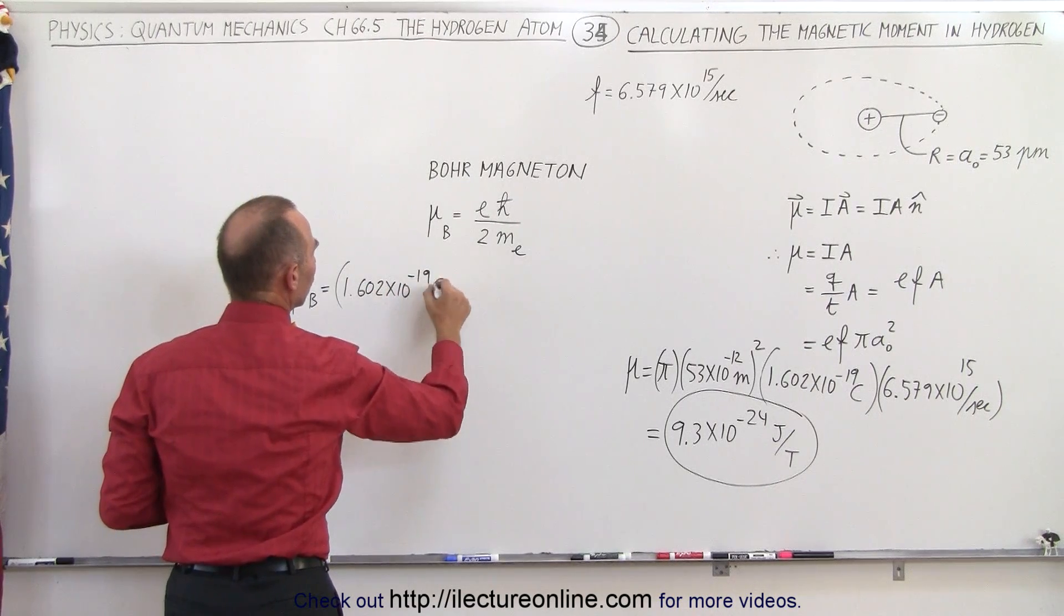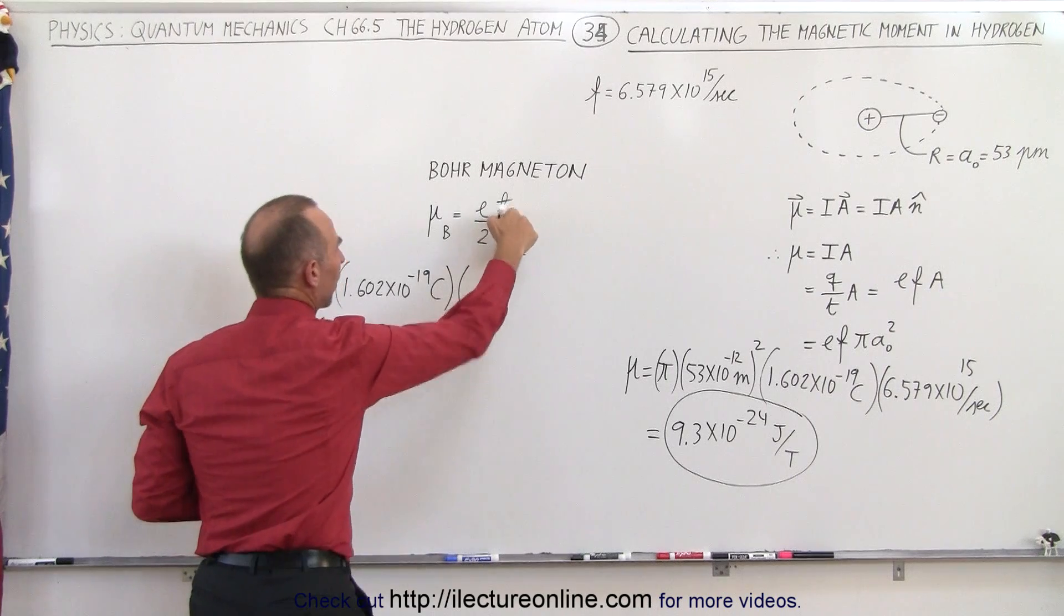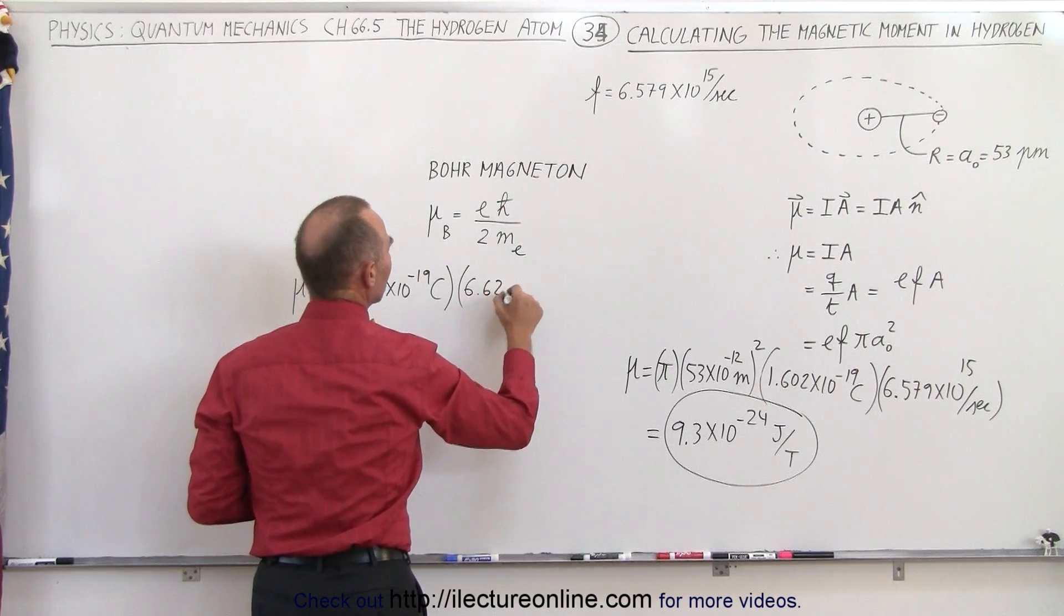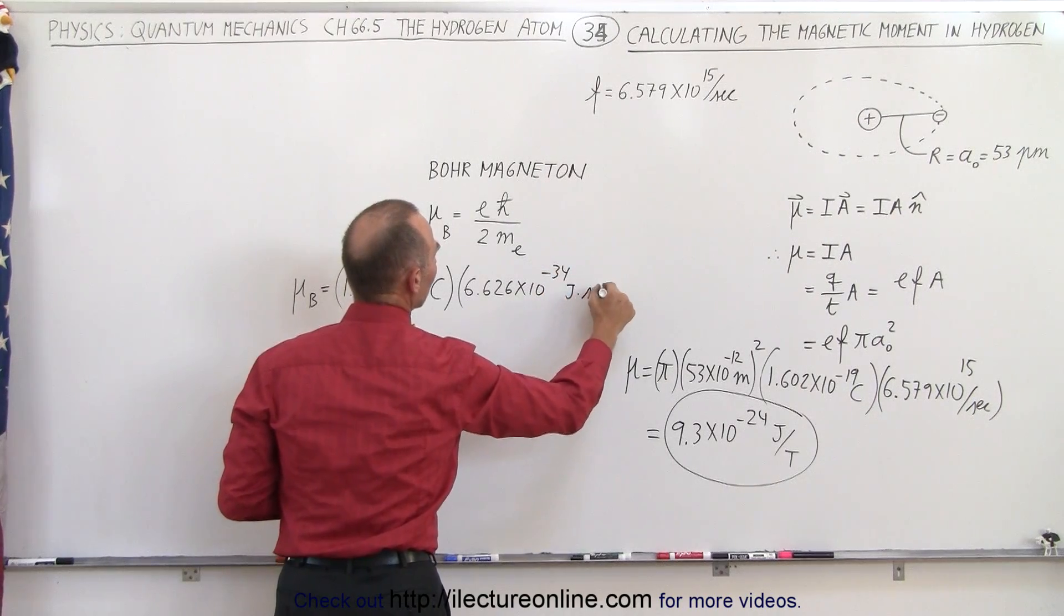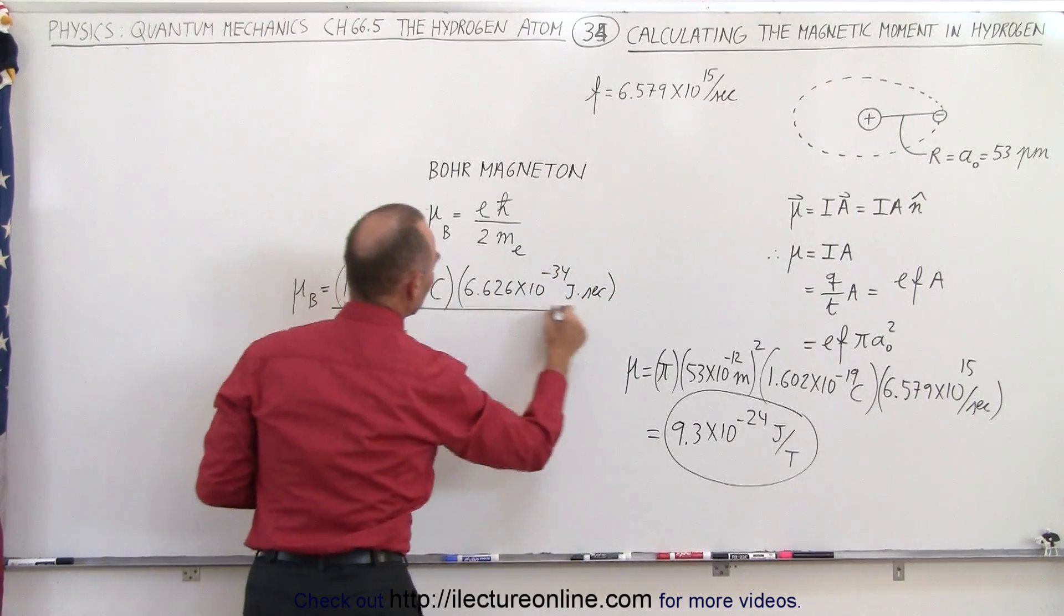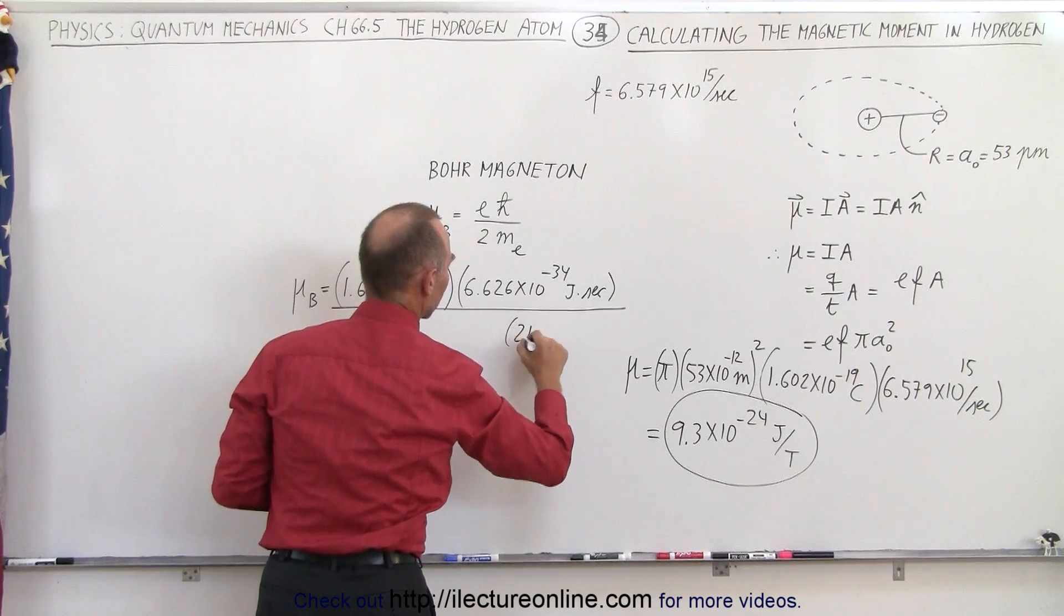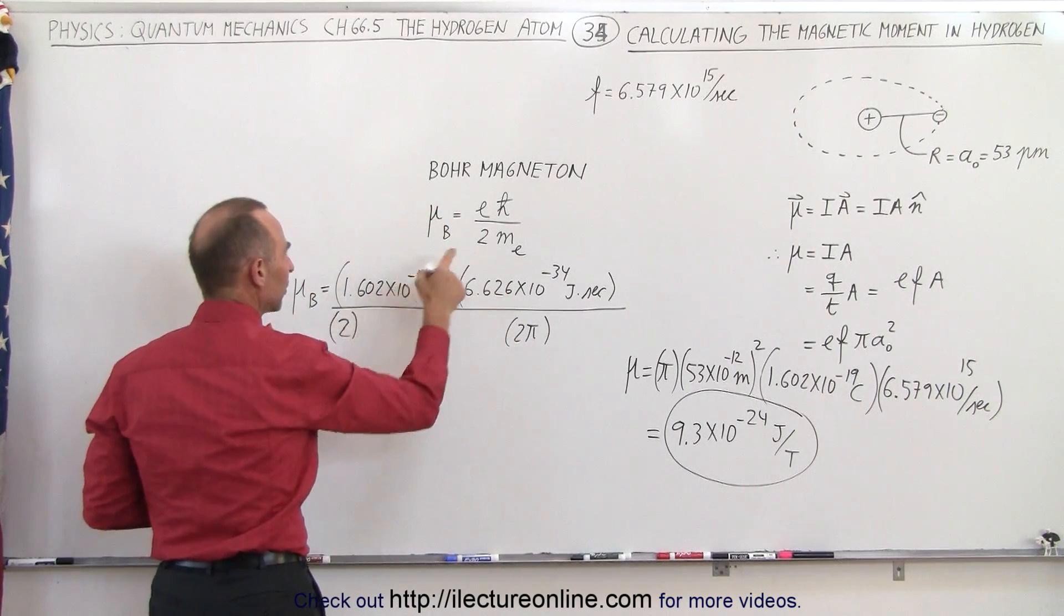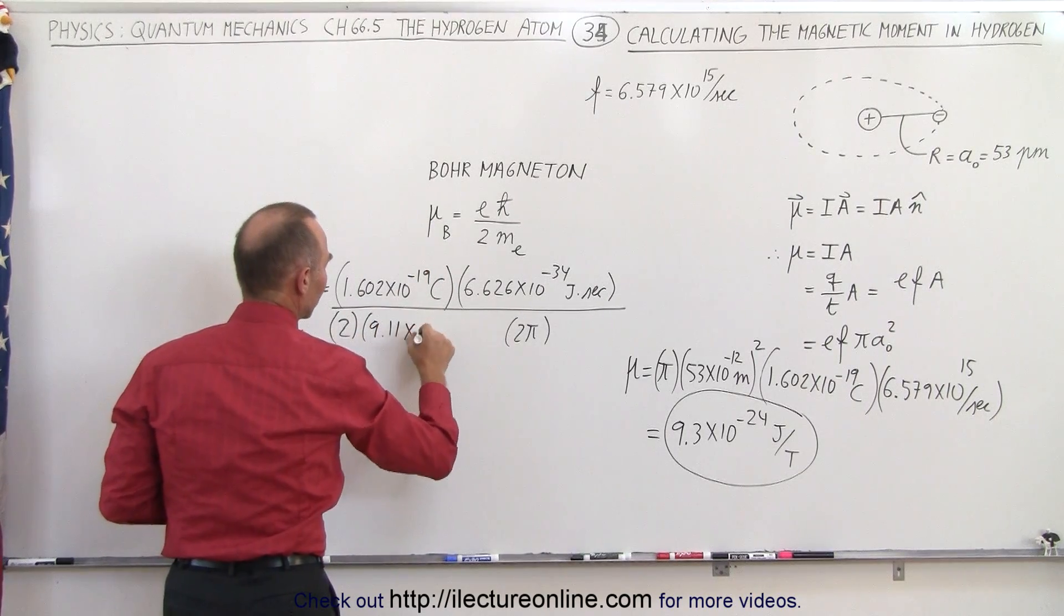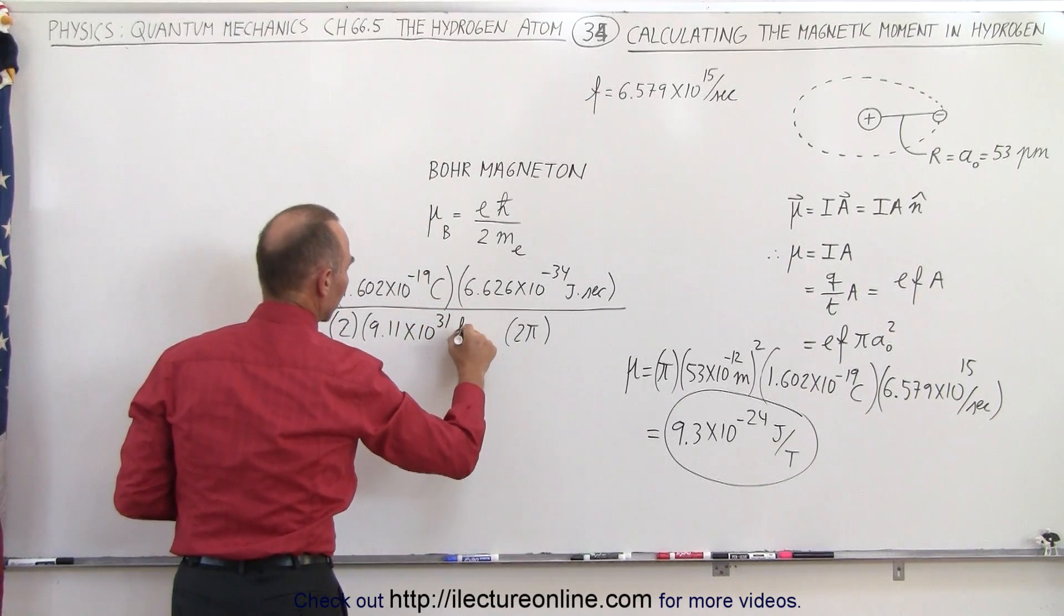And that would be, of course, Coulombs. H-bar, that would be 6.626 times 10 to the minus 34 joules times seconds. And then we have to divide that by 2 pi. Multiply that times 2. And multiply that times the mass of the electron, 9.11 times 10 to the 31 kilograms.